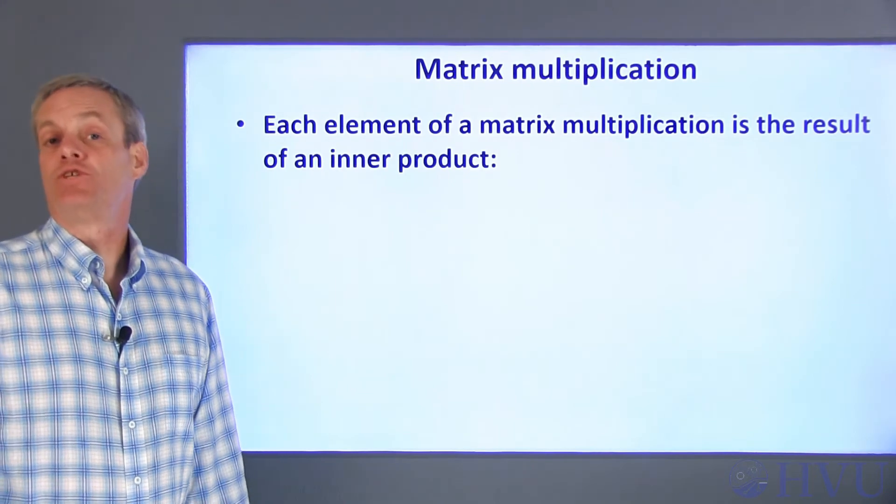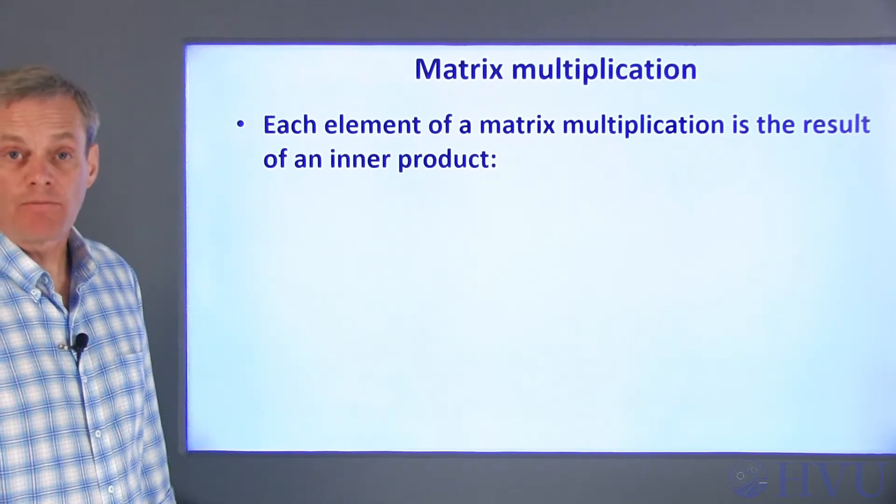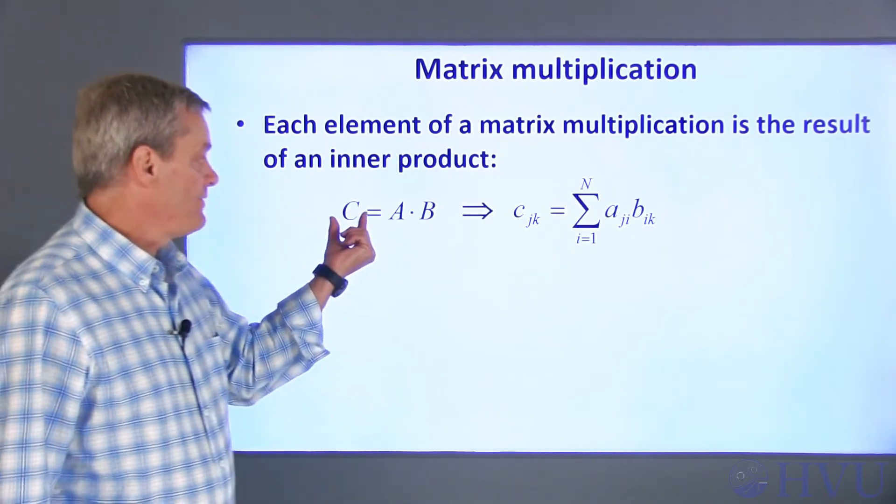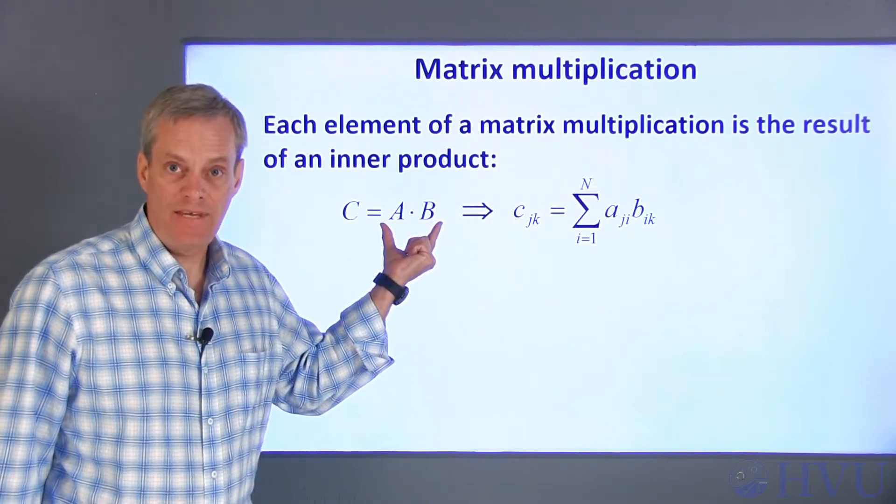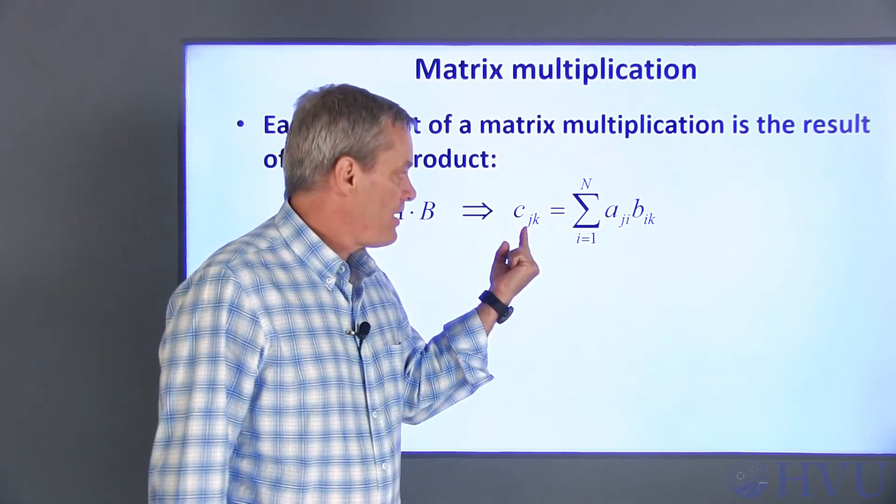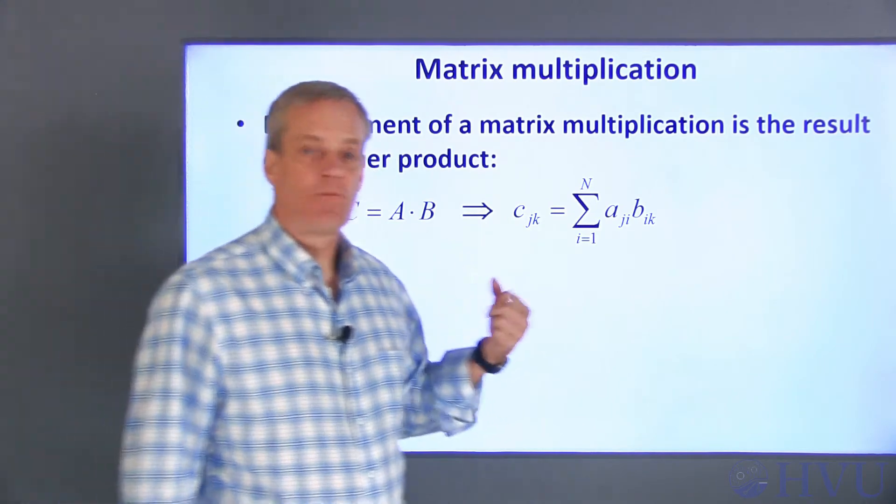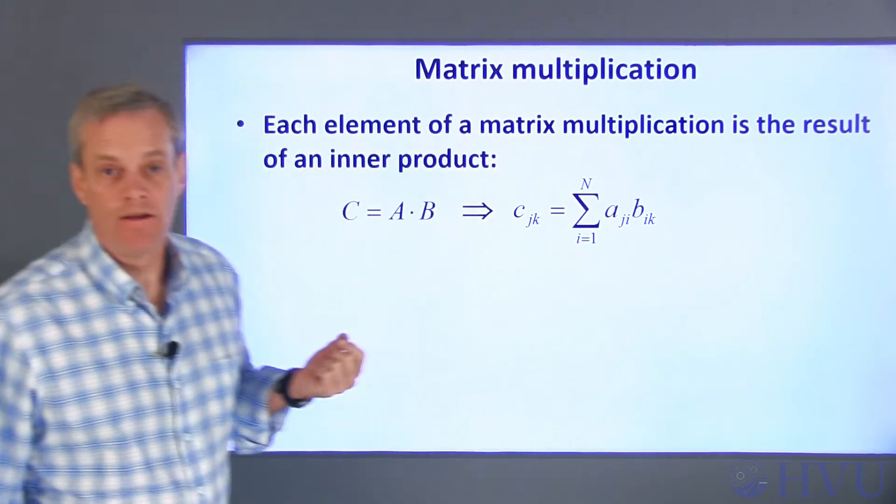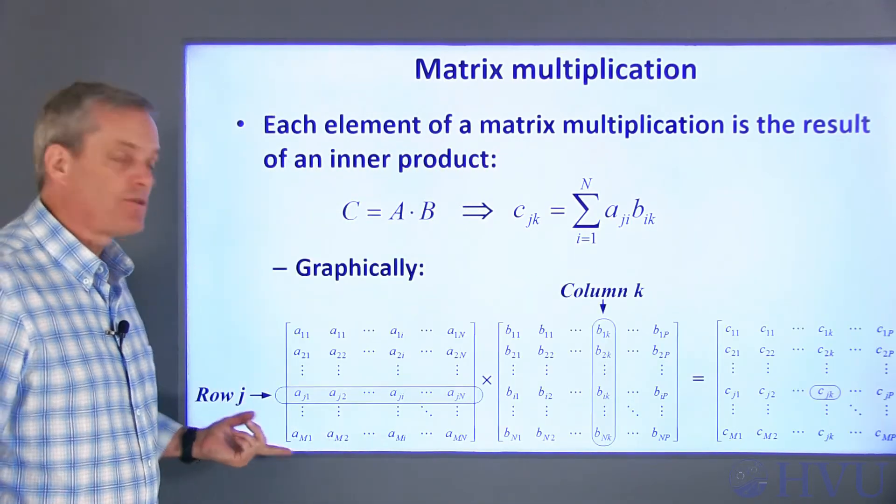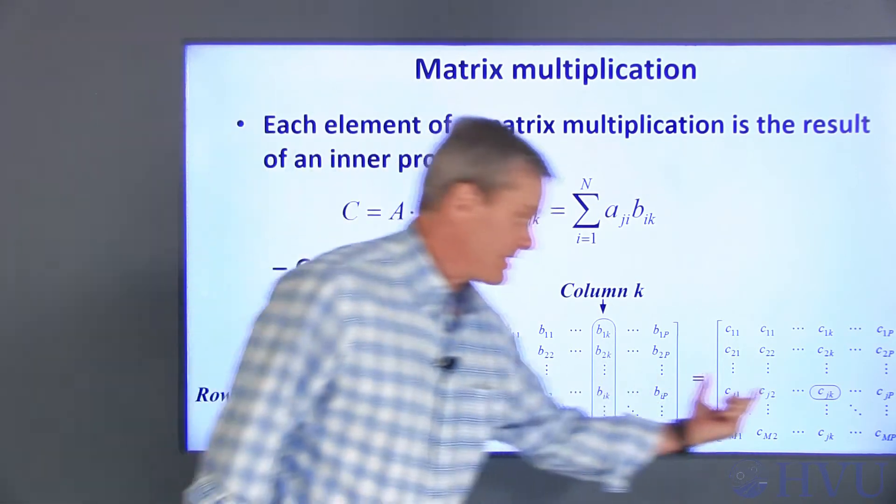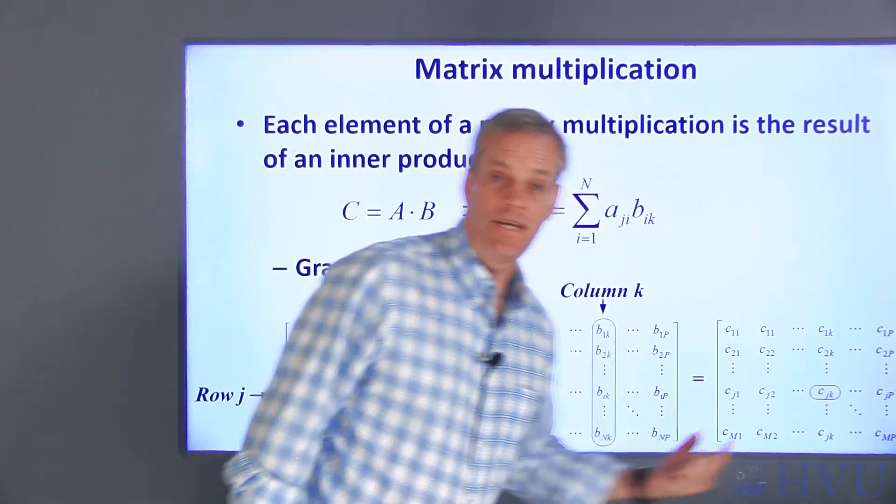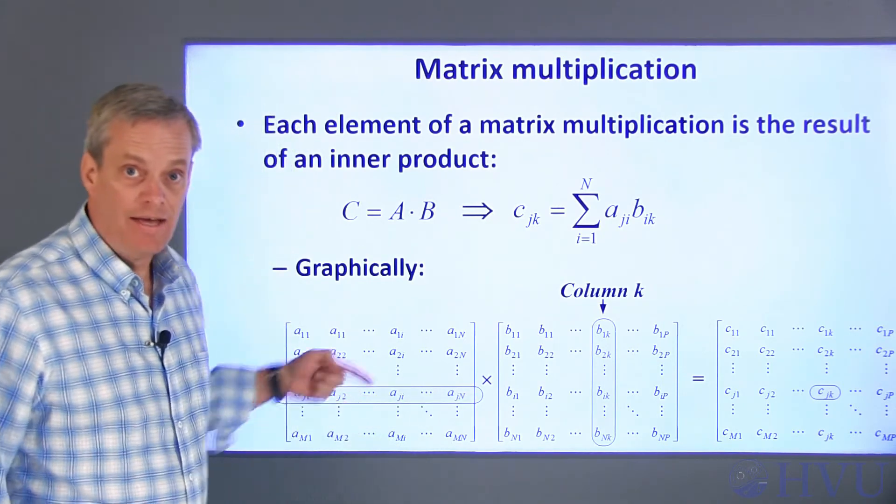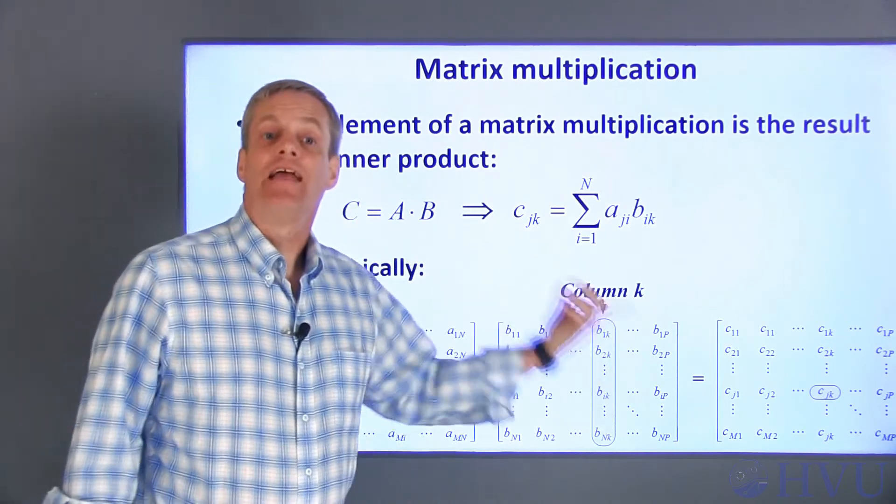Now I'll move on to multiplication of two matrices. In this operation, each element of the resulting matrix is the result of an inner product. So, if C is the product of the matrices A and B, the element at the jth row and kth column in C is the inner product between the jth row of the matrix A and the kth column of the matrix B. Graphically, the process looks something like this. To get the element, which is a scalar, at the jth row and the kth column of C, I multiply the corresponding terms in the jth row of A and the kth column of B, and then add them up.